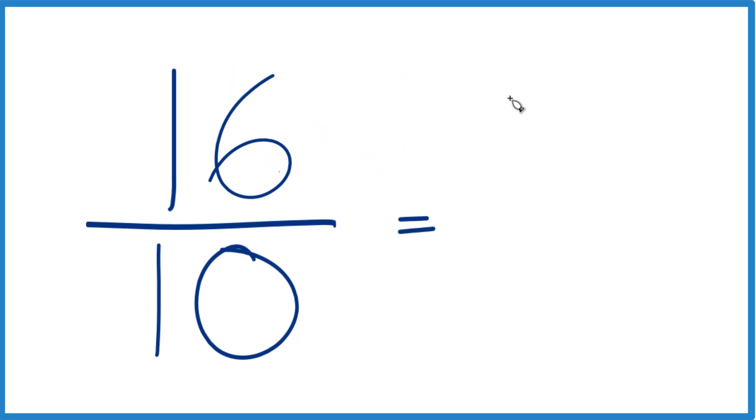16 divided by 2 is 8, and 10 divided by 2, that's 5. So we can simplify or reduce 16 tenths down to 8 fifths.